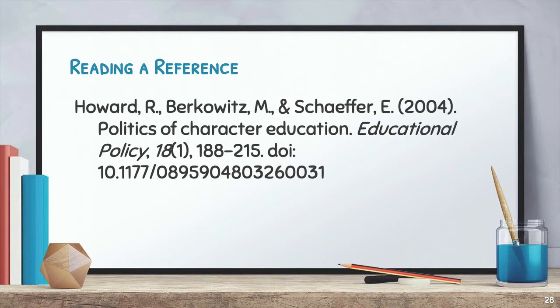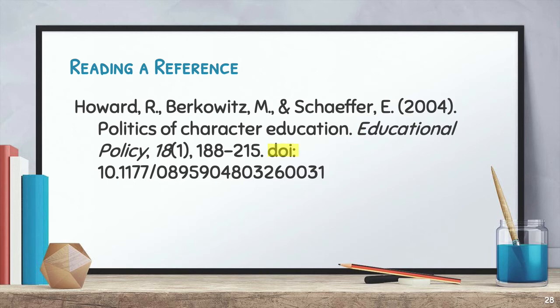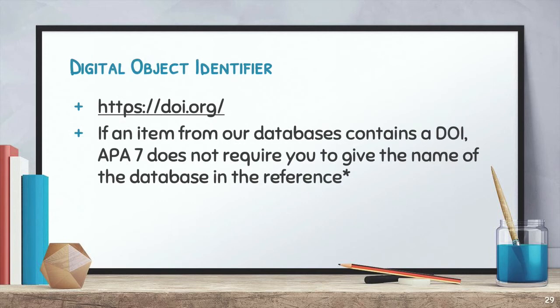Here's another reference from that same article we were looking at earlier. Do you see anything different about it? This article has something called a Digital Object Identifier or DOI. This information lets you go to a specific website called DOI.org to look up the article. If an item from our databases contains a DOI, APA 7 does not require you to give the name of the database in the reference. However, your instructor's preferences take priority here. If your instructor wants the name of the database, you must include it.